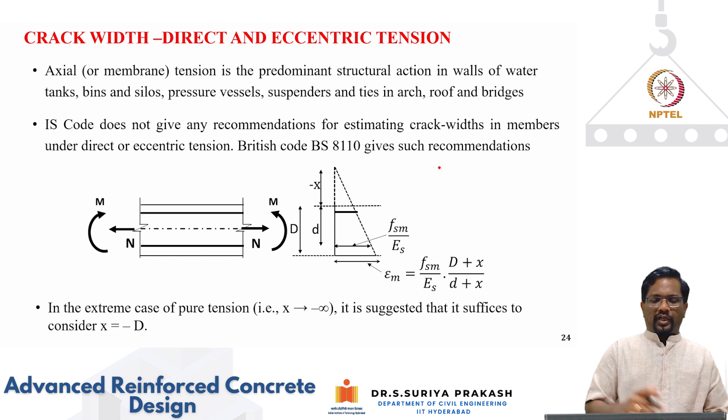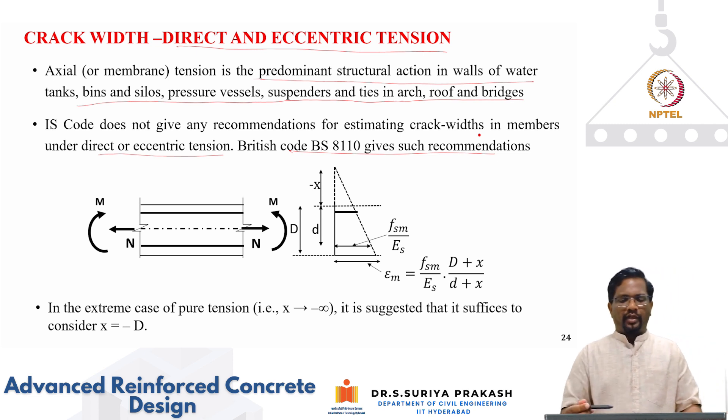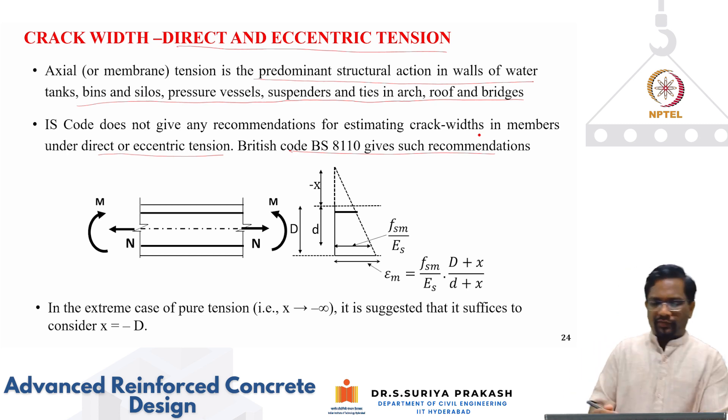This is the example. We can also have situations where members can be subjected to direct or eccentric tension. For example, axial tension is predominant structural accent in walls of water tanks, bins, silos, pressure vessels, suspenders, ties, in arch, roof and bridges. All these elements can be subjected to direct or eccentric tension. In fact, IS code does not give any recommendations for estimating crack widths in members under direct or eccentric tension. Our British code gives some recommendations. Here what we do is again when you have tension and bending, your neutral axis can go fall outside the cross section. We assume this kind of a strain distribution. And rest of the process is all same.